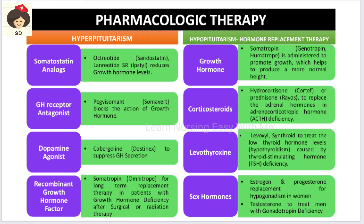Coming to management — pharmacological therapy: in hyperpituitarism, somatostatin analogs such as octreotide and lanreotide are administered to reduce growth hormone levels. Growth hormone receptor antagonists — pegvisomant — block the action of growth hormone. Dopamine agonists — cabergoline — suppress growth hormone secretion. Recombinant growth hormone — somatotropin — is given as long-term replacement therapy, mainly when the patient has undergone surgery or radiation therapy and the pituitary can no longer secrete the hormone.